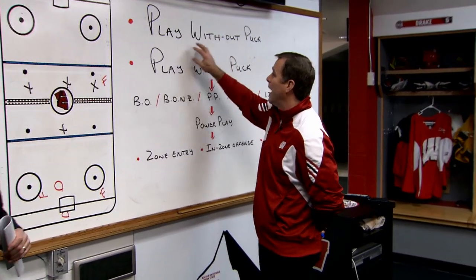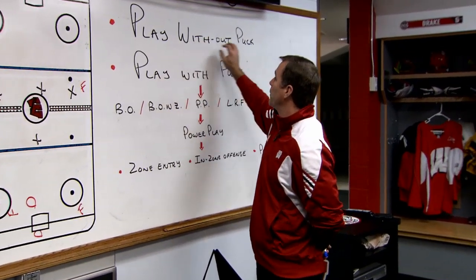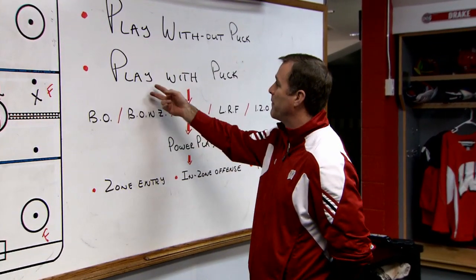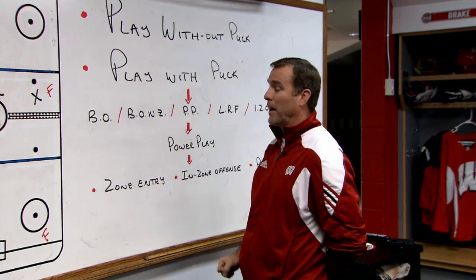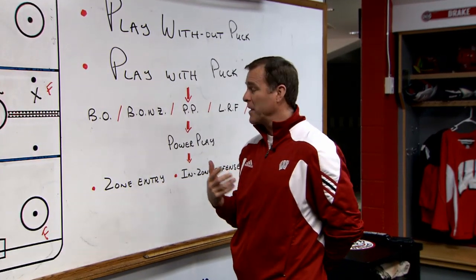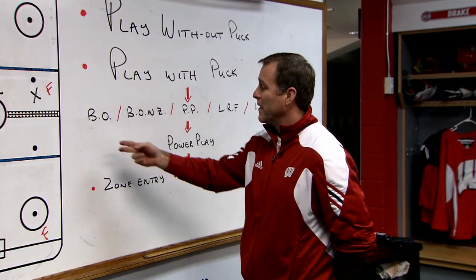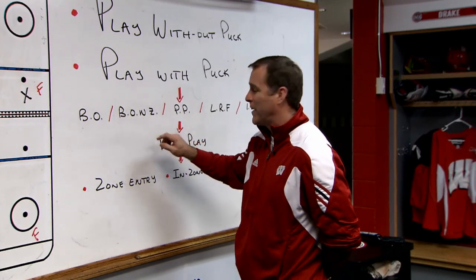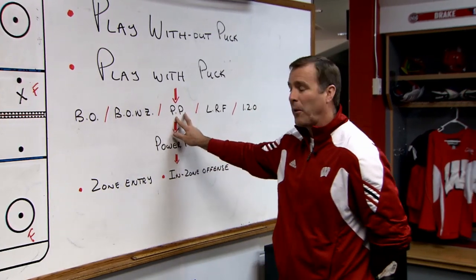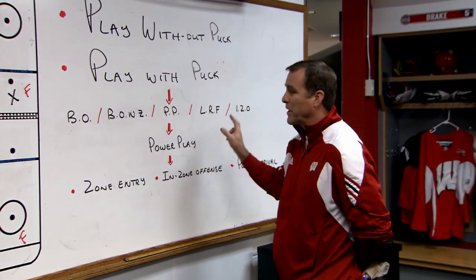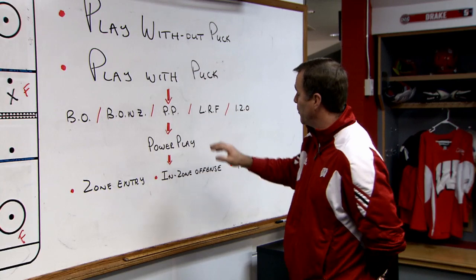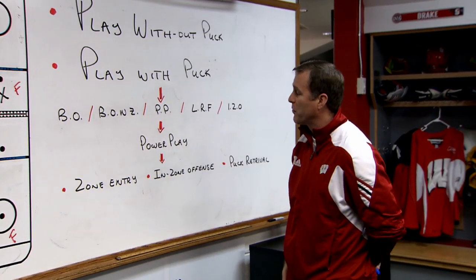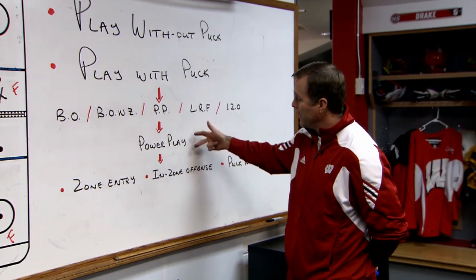Before we get started, we'll take a look at the overview of the game. Play without the puck — as Robbie said, we went over that last time. Now we have play with the puck. The acronyms within our schemes include our breakouts, the neutral zone (BONZ), our power play, our line rush four when we attack the offensive blue line, and then our in-zone offense once we're in the offensive zone.